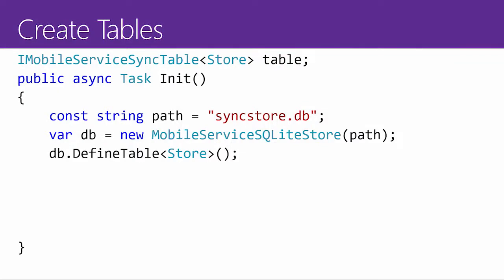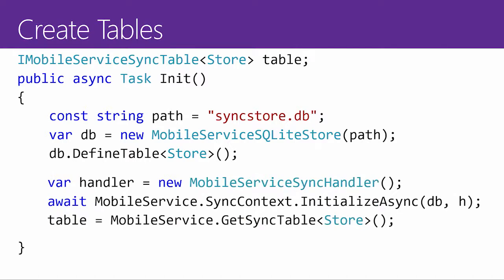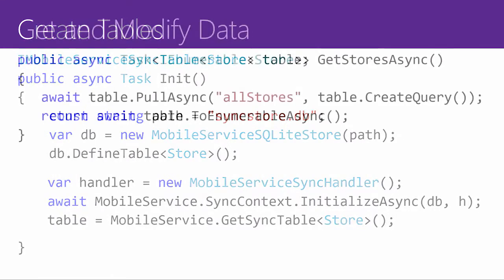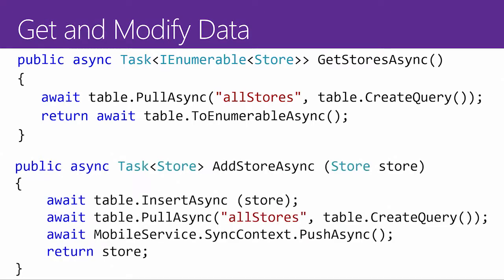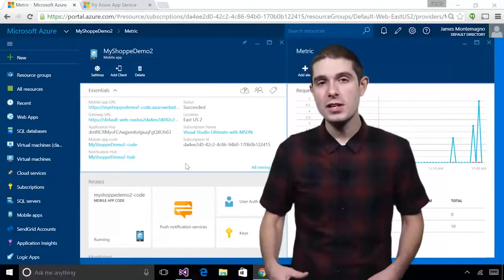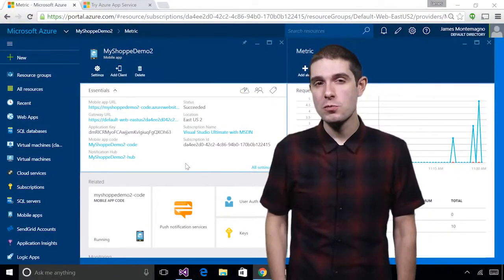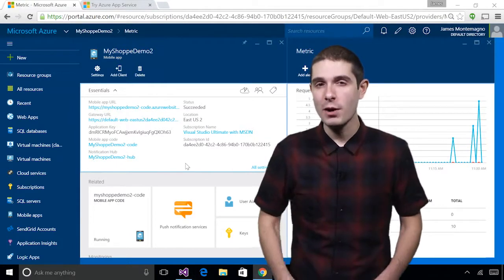It's super simple to get started — simply download the NuGet packages and create your mobile service client. To create tables, create a SQLite store, define a table, and create it. When you want to add or remove items, get all your stores asynchronously, pull asynchronously. To add a store: insert it, pull the current version, and synchronize. Let's see how easy it is to get started with Azure Mobile Apps and Xamarin to create great cloud-connected experiences.